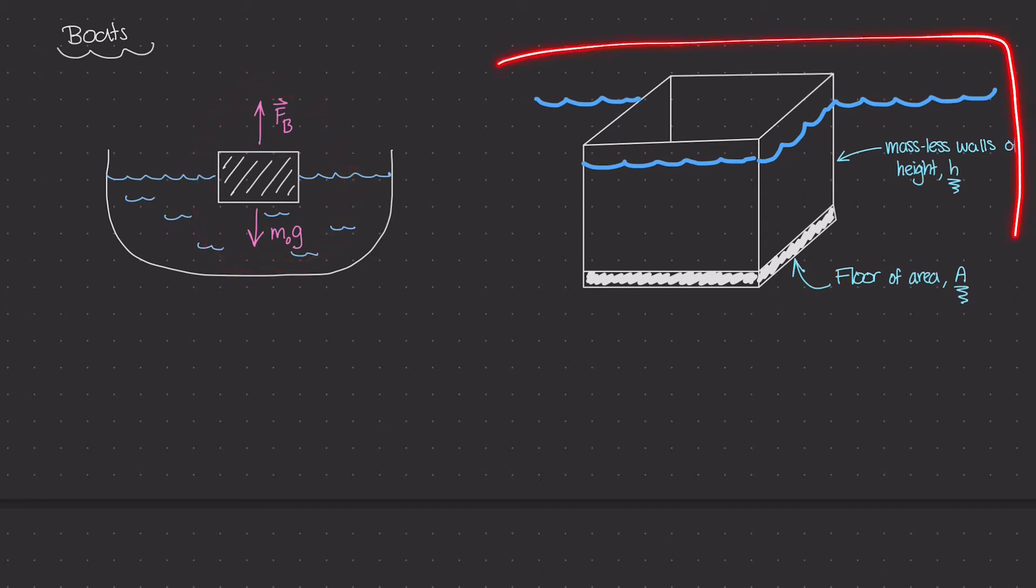Now on the right side here, don't freak out, this might be kind of a confusing drawing. This diagram on the right is my boat. This boat is really just a hollow box with massless walls. All four of these walls are massless, but they have some height h. At the bottom of this boat, we have the actual floor with some area A. I want to use this diagram to illustrate how boats float.